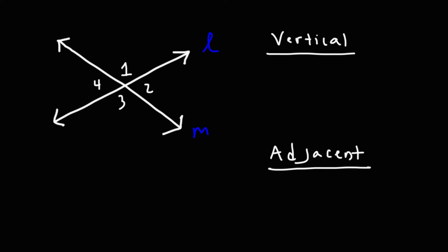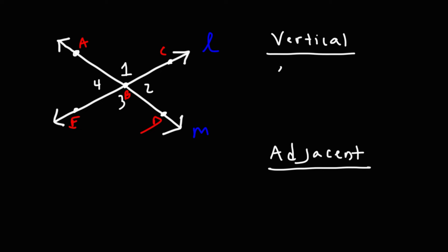Vertical angles are across from each other and they share a common vertex. So let's put some points on this diagram. Let's call this point A, B, C, D, and E. Angles one and three are vertical angles — they're across from each other, and vertical angles are congruent; they have the same angle measure.